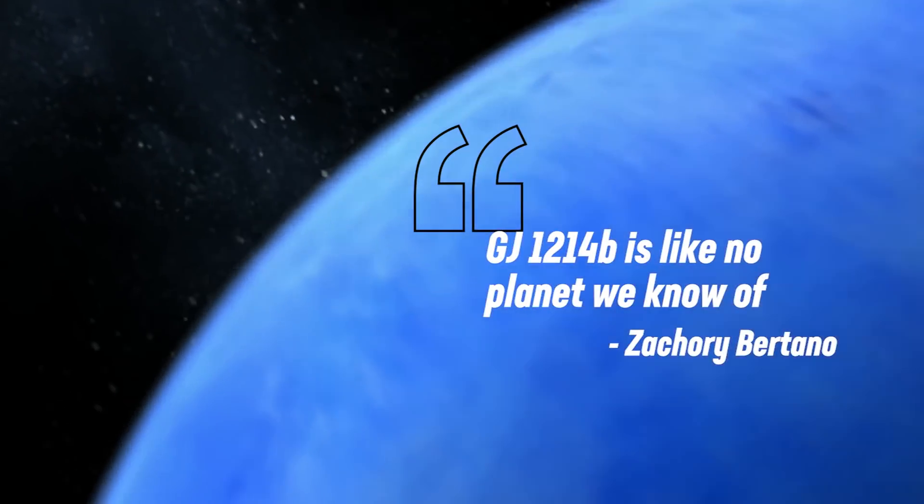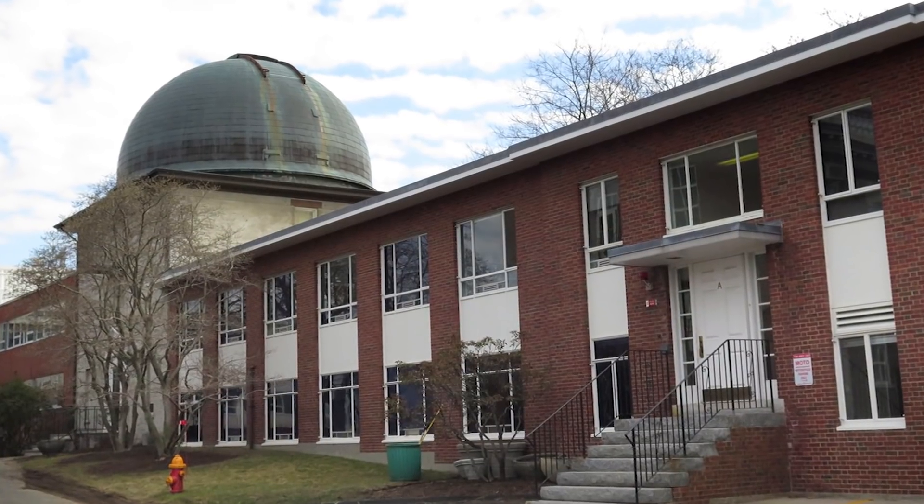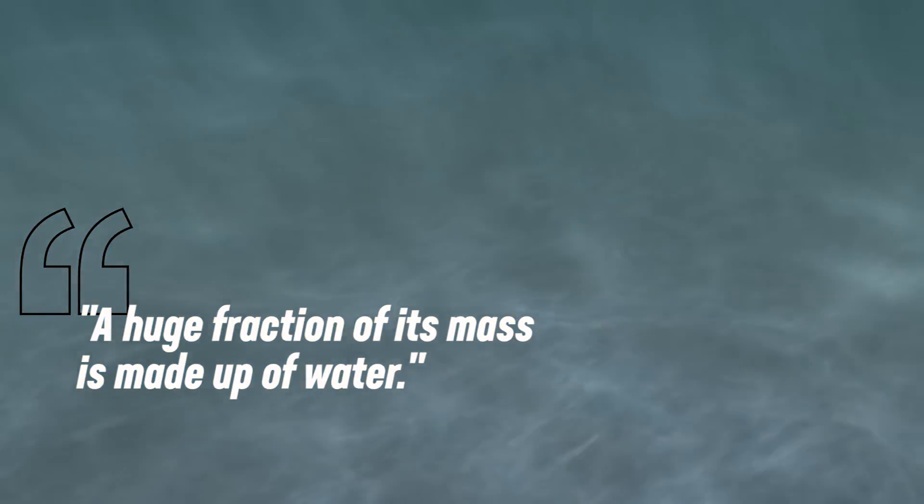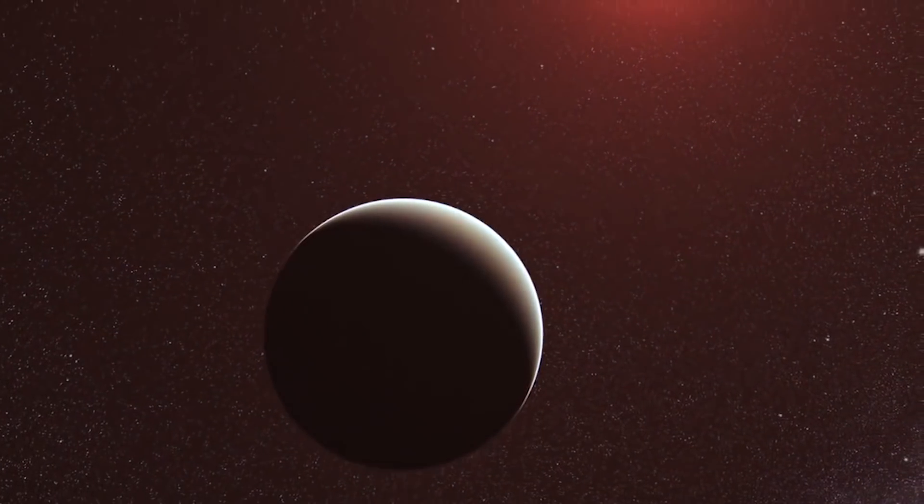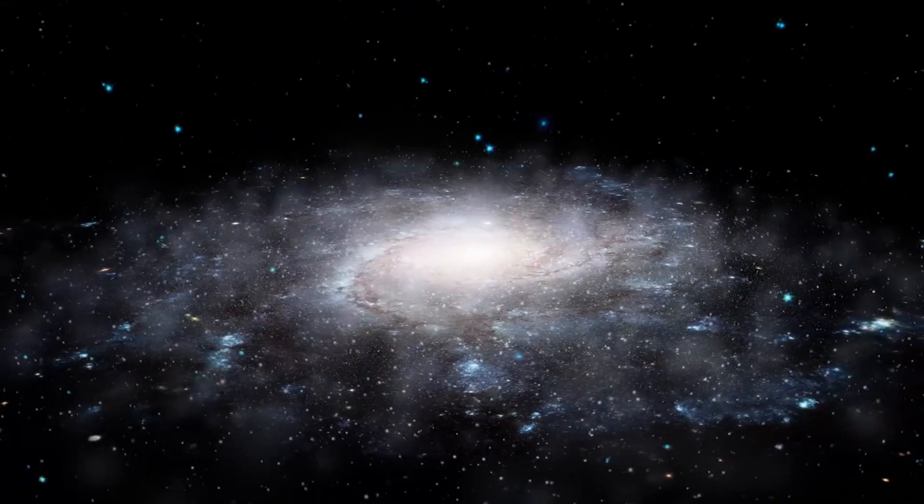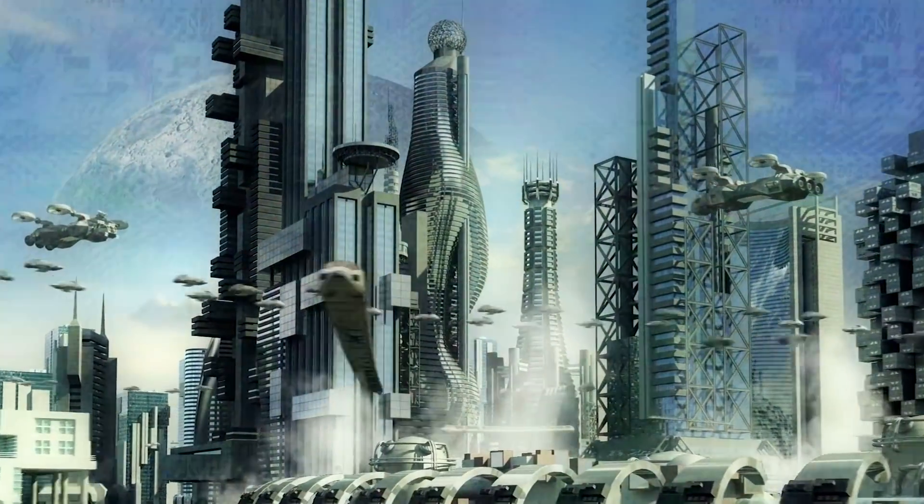GJ1214b is like no planet we know of, study lead author Zachary Berta of the Harvard-Smithsonian Center for Astrophysics in Cambridge, Massachusetts, said in a statement. A huge fraction of its mass is made up of water. The exoplanet, orbiting a small star only 40 light-years away from us, thus opens dramatic new perspectives in the quest for habitable worlds.